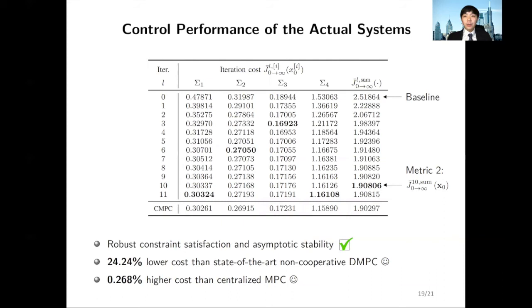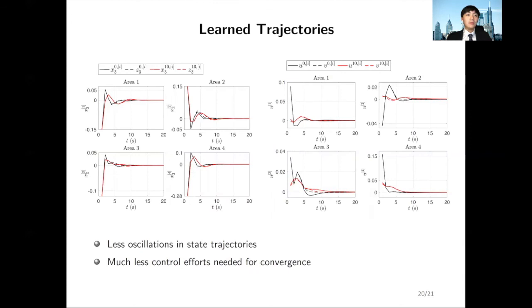Now, in terms of actual subsystems, we're looking at metric 2, which is the plant-wise performance. Here, we use non-cooperative distributed MPC as the baseline for comparison. After 10 iterations, we achieve a cost reduction of about 25% compared to the baseline. Surprisingly, this result is only 0.3% worse than the decentralized MPC solution. Of course, we wouldn't expect this to happen in general cases.